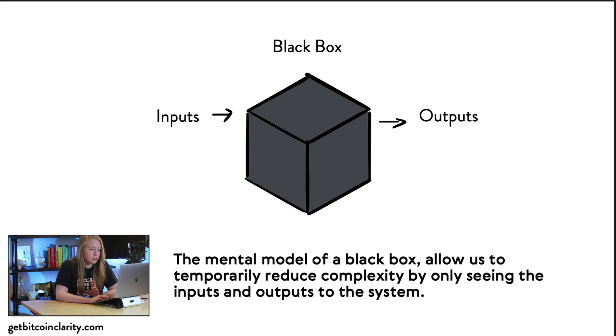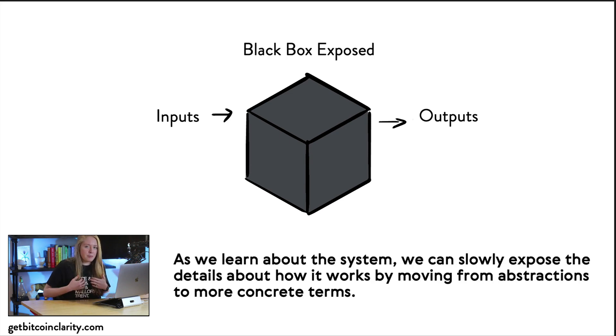The mental model of a black box allows us to temporarily reduce complexity by only looking at the inputs and outputs of the system. If you have something that's very difficult to understand how it works, you can just look at the inputs and outputs of that system and then sort of infer how it works.